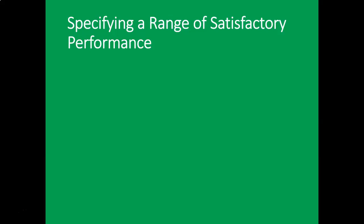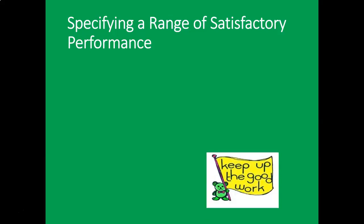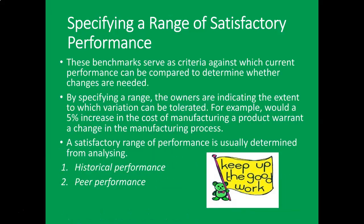Specifying a range of satisfactory performance. These benchmarks serve as criteria against which current performance can be compared to determine whether changes are needed. By specifying a range, the owners are indicating the extent to which further variations can be tolerated. For example, with a 5% increase in the cost of manufacturing a product, there may be a change in the manufacturing process. A satisfactory range of performance is usually determined from analysing historical performance or peer performance.